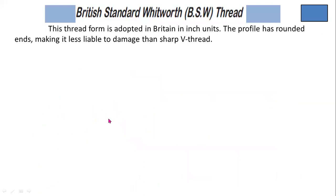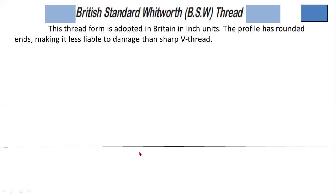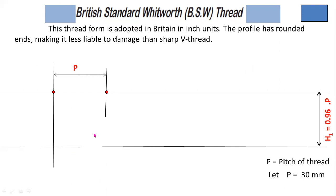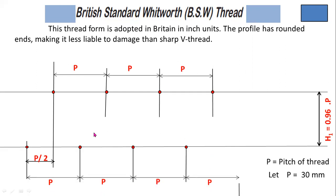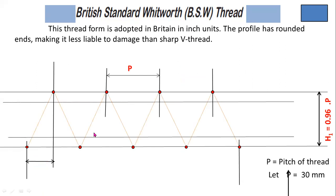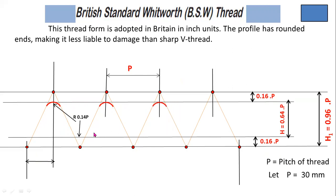Now, the British Standard Whitworth thread — this thread form is adapted in Britain in inch units. The profile has rounded ends, making it less liable to damage than the sharp V thread. This is the shape of a British Standard Whitworth thread.